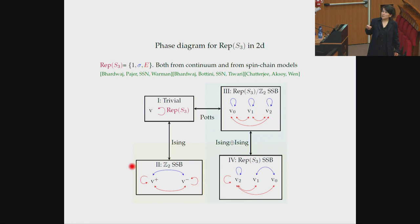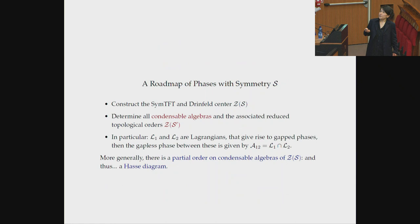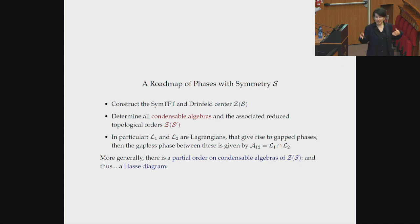There's also a multi-critical point that Gwen and collaborators are trying to pin down, corresponding to algebra 1 in this case. The roadmap to get all phases for a symmetry S is: construct the SymTFT, construct the Drinfeld center, classify all condensable algebras. The maximal ones give gapped phases, the non-maximal ones give gapless phases, and transitions are characterized by intersections of Lagrangians.